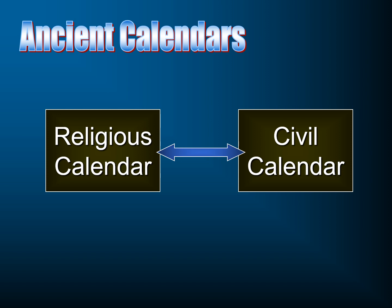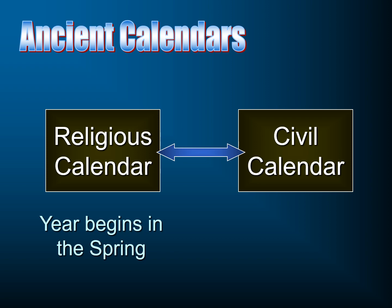You've heard perhaps people speak of a religious calendar versus a civil calendar used by the Jews, and that's a little bit misleading. Because in the Bible, any reference to months and years, a year always begins in the spring — around March. Their months don't add up quite to ours, but it's pretty close, so around the month of March would be the beginning of the year.